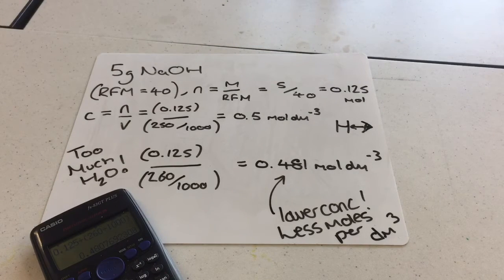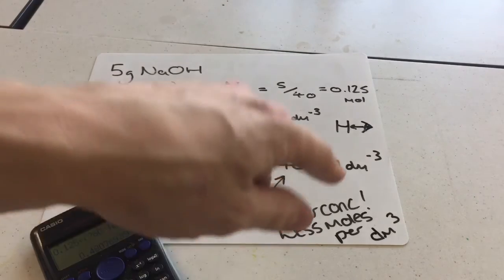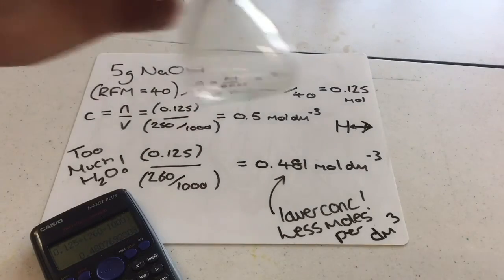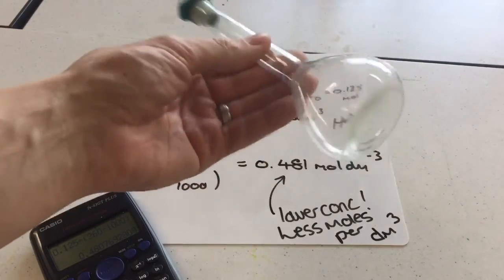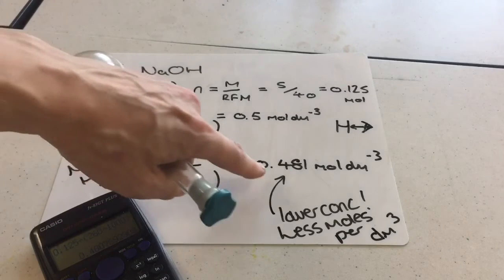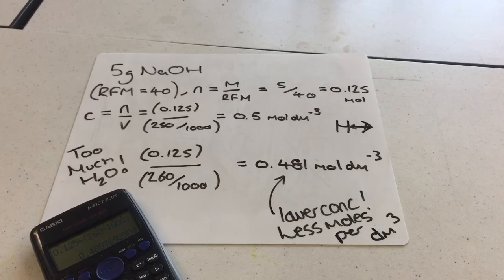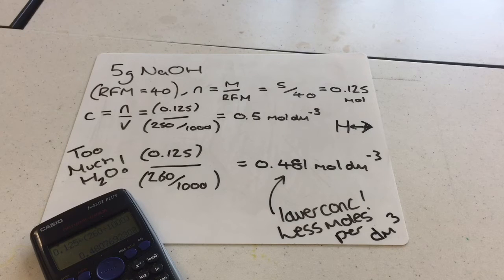So, what knock-on effect does this have? It means you've got fewer moles per decimetre cubed. So if I took a 25cm³ portion of the less concentrated solution, there are literally fewer moles of reactants in there than I'm expecting.